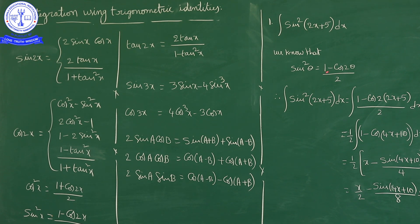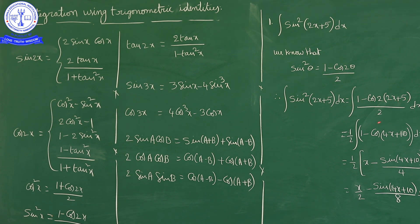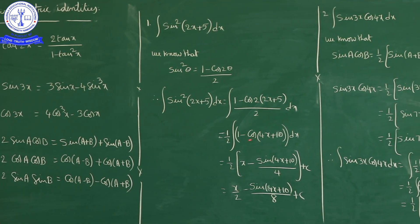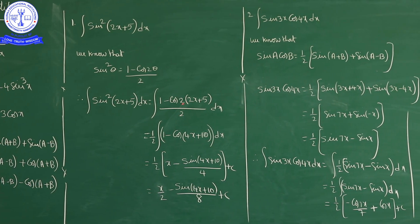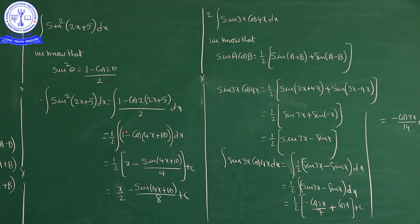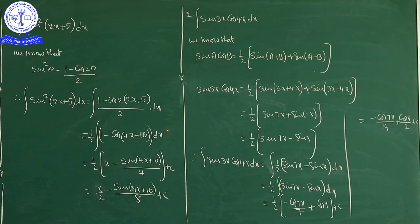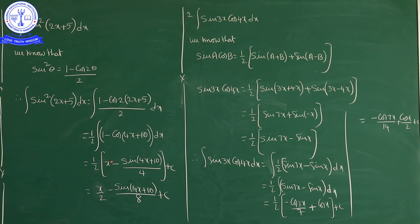Using the formula, sin²(2x+5) equals [1 minus cos(2(2x+5))] / 2 equals [1 minus cos(4x+10)] / 2. So the integral becomes (1/2) ∫ [1 minus cos(4x+10)] dx. Integration of 1 dx is x. Integration of cos(4x+10) is sin(4x+10)/4, writing the x-coefficient 4 in the denominator.